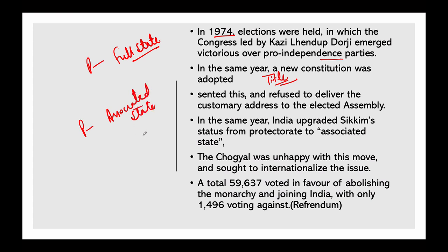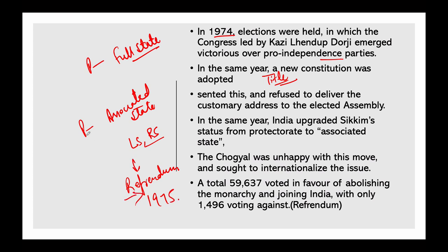As an associated state, India allotted one seat each in the Lok Sabha and Rajya Sabha to Sikkim. But the Chogyal rulers were very unhappy with this move and sought to internationalize the issue. This did not go down well with Sikkim's elected leaders. A referendum was held in 1975 in which 59,637 people voted in favor of abolishing the monarchy and joining India, with only 1,496 votes against. India's Parliament then approved an amendment to make Sikkim a full state.